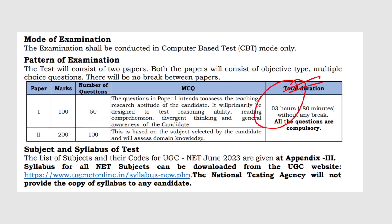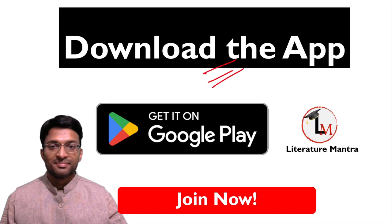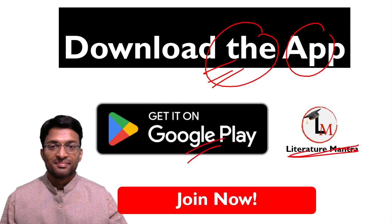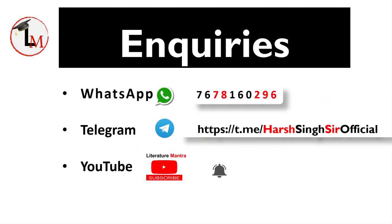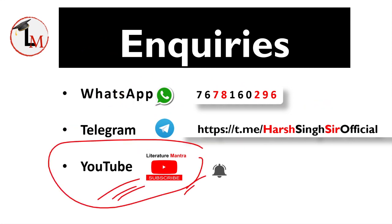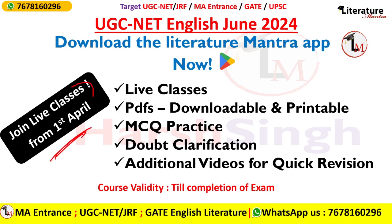The duration of this exam is 3 hours. As far as exam time is concerned, time is ample in the examination hall — the only thing is you should know the correct answers. There are 100 questions. For more details about this exam, you can visit the website of NTA or UGC. To enroll in this crash course, download the Literature Mantra app available on Google Play Store. For any inquiries, WhatsApp or call us at 7678-160-296. You can also follow us on our YouTube channel, Literature Mantra. Classes will begin from the 1st of April.